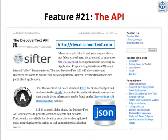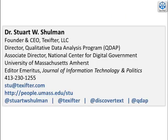Our application programming interface is a robust and secure access point. The sister services are available in DiscoverText and can be accessed via the API. Please visit dev.discovertext.com to learn more. So there you have it — these are the 21 core features, and we're continually adding more. Your feedback is critical to that process. We'd love to hear from you.